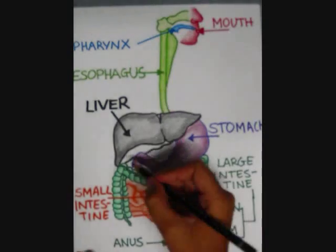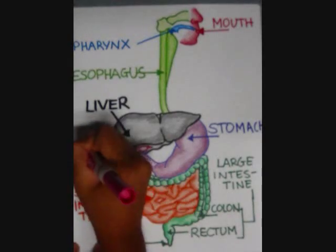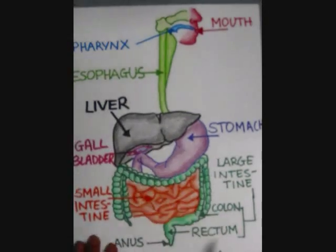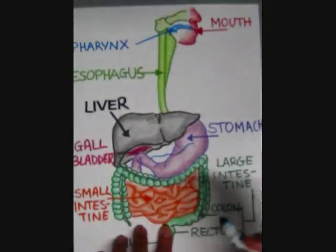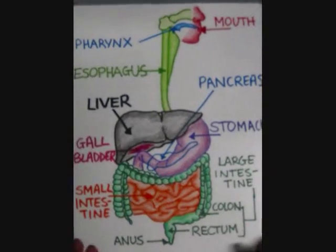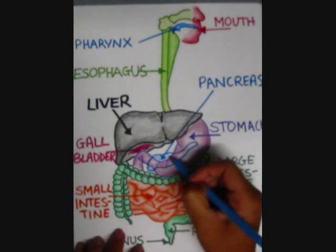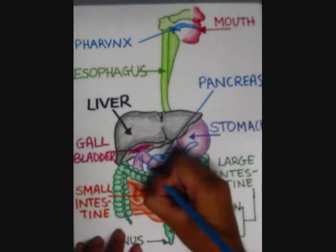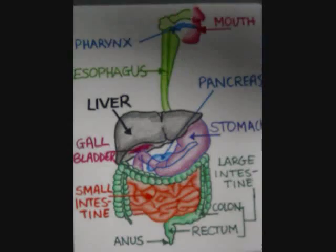Accessory organs to the GI tract include the liver, which produces bile; the gallbladder, which stores the bile produced by the liver; and the pancreas. The pancreas produces several important hormones such as insulin and glucagon, and secretes pancreatic juice containing digestive enzymes that pass to the small intestine.